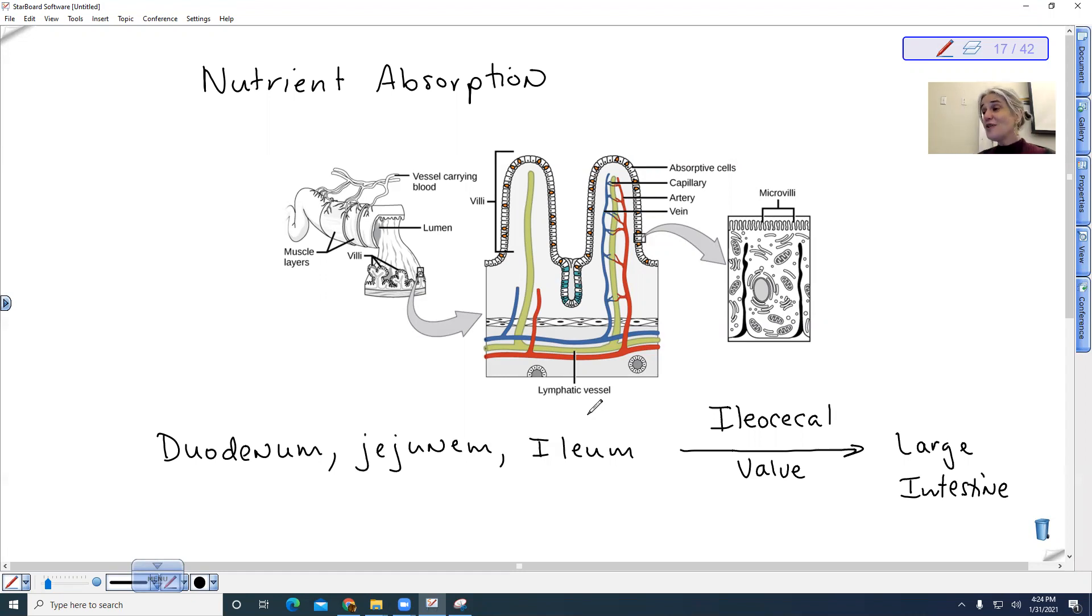So nutrient absorption is where we have digested everything extracellularly, but now everything is small enough that it can diffuse or be actively transported through a cell.